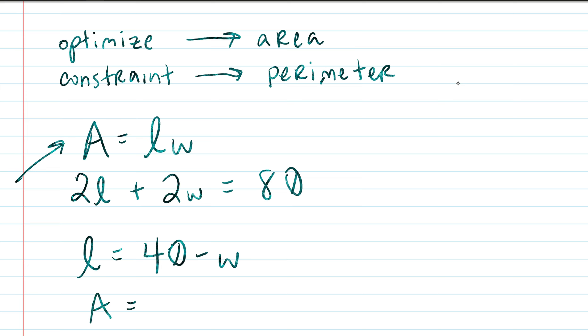Area is equal to 40 minus w times w. That looks to be equal to, after you distribute, 40w minus w squared.